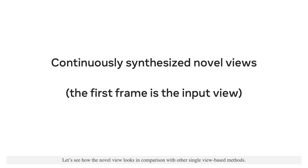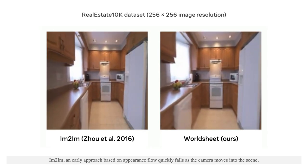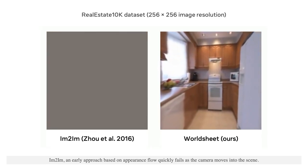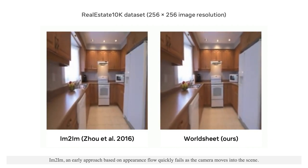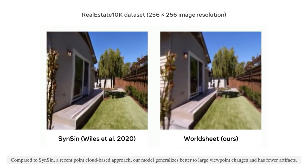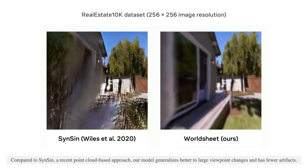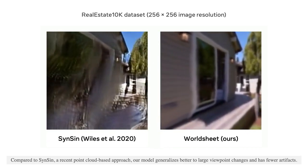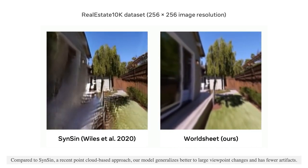Let's see how the novel view looks in comparison with other single-view-based methods. Im-to-im, an early approach based on appearance flow, quickly fails as the camera moves into the scene. Compared to SinSin, a recent point cloud-based approach, our model generalizes better to large viewpoint changes and has fewer artifacts.